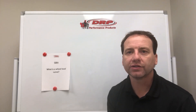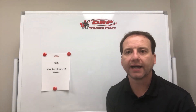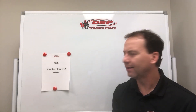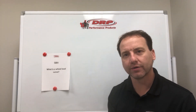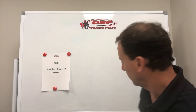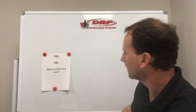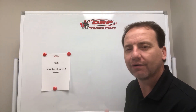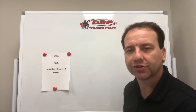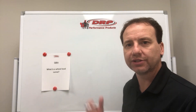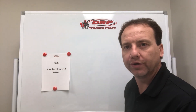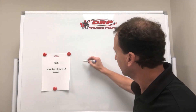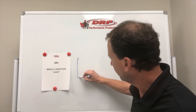All right, Q&A. This one is: what is Willow Curve? Willow Curve — I'm on a whiteboard here, why don't I just show you what Willow Curve is. So Willow Curve is how fast, the speed at which the tire, the wheel, the corner of the car, actually picks up its load. So let's draw this little graph here.